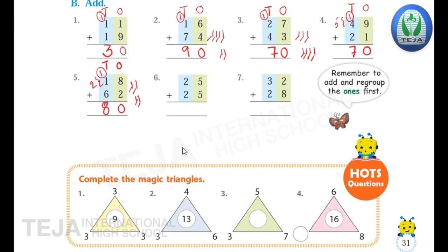6th question: 25 plus 25. Write the place values — 1's and 10's. The digits in the 1's place are 5 and 5. Keep one 5 in your mind, draw 5 lines, count after 5: 6, 7, 8, 9, 10. So carry 1 in the 10's place and write 0 in the 1's place. In the 10's place: 1 plus 2 plus 2. 1 plus 2 is 3, then 3 plus 2 — count after 3: 4, 5. So the answer is 50. 25 plus 25 is 50.